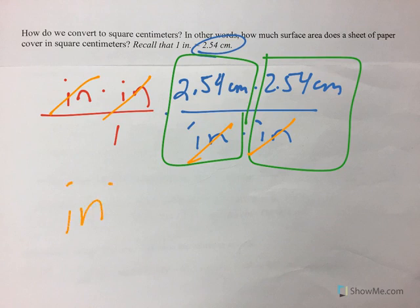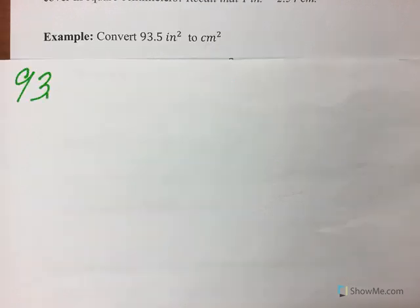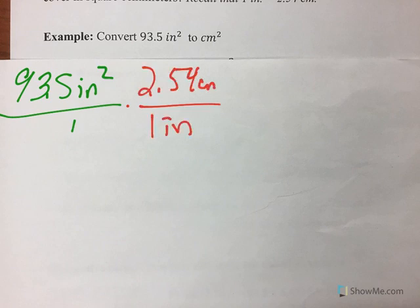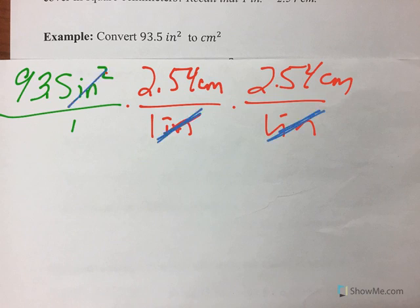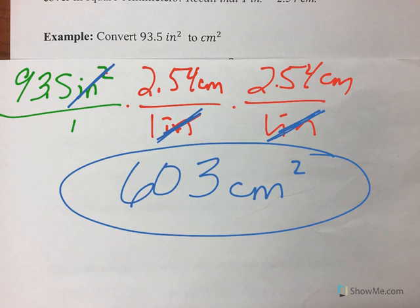So what's easy to say is if you have a label that is squared, then when you do the conversion, you need to do that conversion twice, because 1 plus 1 is 2. So convert 93.5 square inches to centimeters. So I know that 1 inch is 2.54 centimeters. But 1 inch does not equal 2. So if I do that again, then I can say 1 plus 1 is 2. I multiply all the way across, and I get approximately 603 square centimeters. And notice how my centimeters are also squared, because 1, 2. I have 2 centimeters that makes it squared.